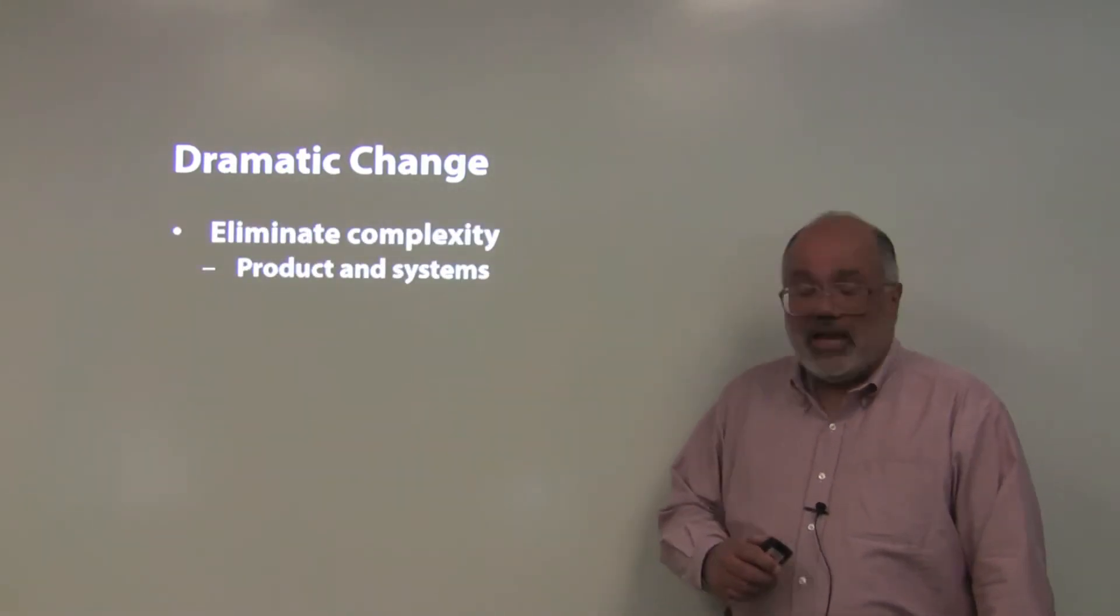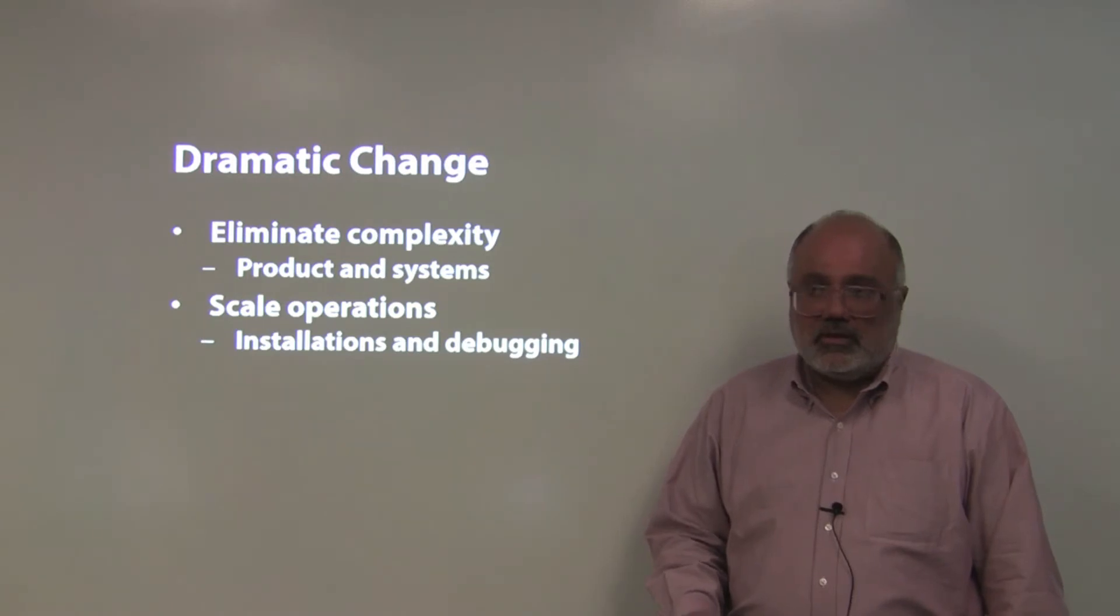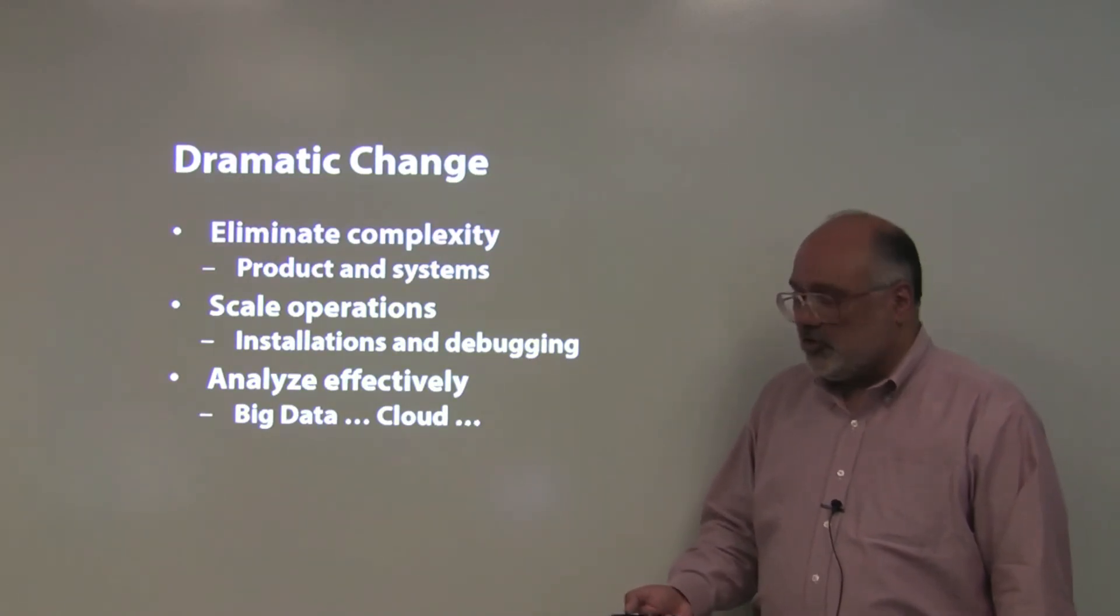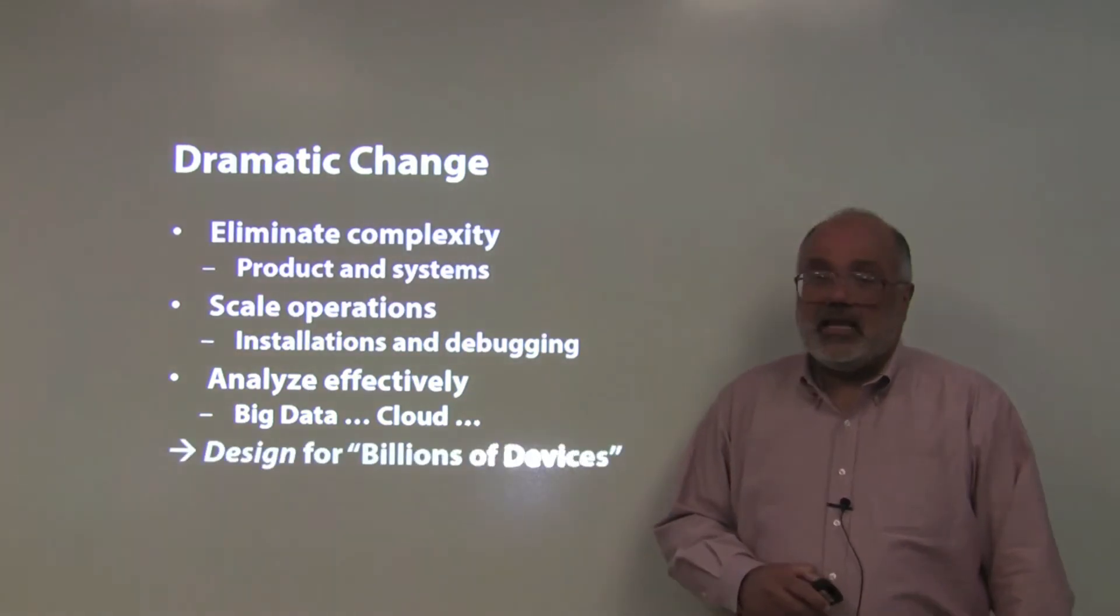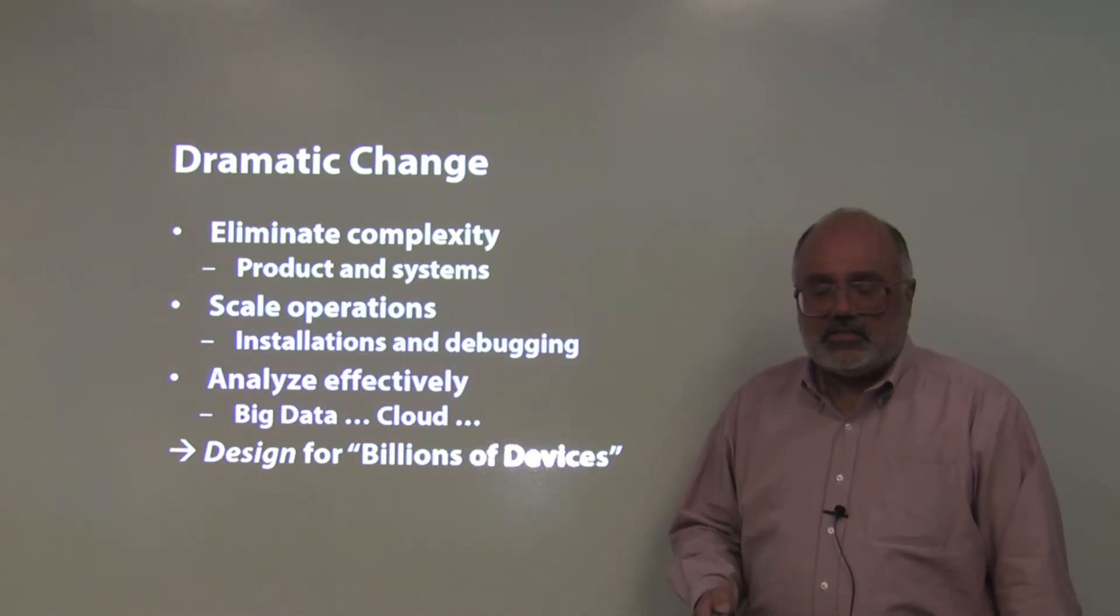There needs to be dramatic change. You have to eliminate complexity in products and systems. Everything you do for machine-to-machine applications has to change. You have to be able to scale your operations, manufacturing, installations, debugging your devices when they don't work out in the field, and you have to be able to analyze effectively. If you cannot analyze the information that these billions of devices are going to be giving you, then you have a problem. So you have to have new solutions: big data, cloud solutions, such as the kind we're going to be deploying very shortly. You have to change the way you do things. You have to design for billions of devices, not for a few devices or tens of thousands. You have to design for billions.